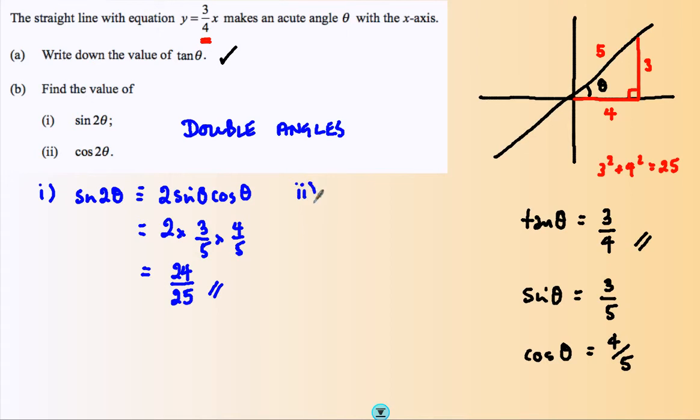And my second identity. I could do, actually, once I've got this, I could do a bit of Pythagoras again to get cosine of 2 theta. But so that we look at the identities, I'm going to do it as a double angle identity.